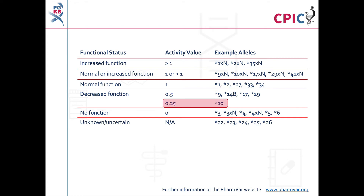As a result of the CPIC CYP2D6 genotype-to-phenotype standardization project, the CYP2D6 star 10 allele was assigned an activity value of 0.25, reflecting its significantly reduced function compared to other decreased function alleles. As this guideline was published before completion of the standardization project, the star 10 allele is still given an activity value of 0.5 in the original manuscript. However, the guideline has been fully updated in the CPIC database to account for the new activity value of star 10, and this update has not altered the guideline recommendations.